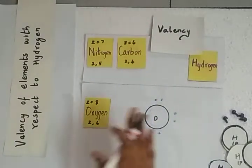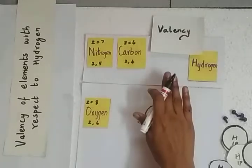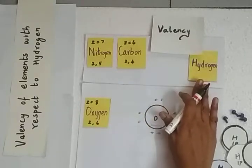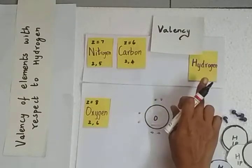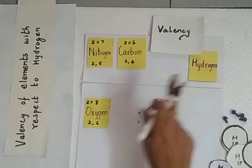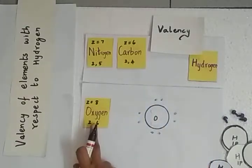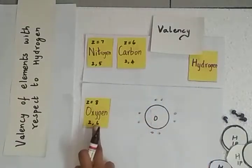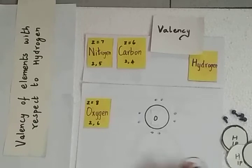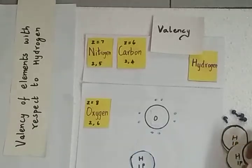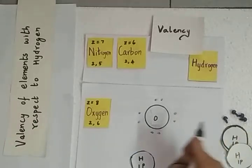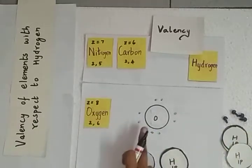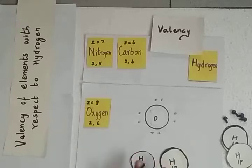We are going to learn to express the valency with respect to hydrogen — that is the number of hydrogen atoms that an atom of an element can combine with. If oxygen can combine with two atoms of hydrogen, then the valency of oxygen is 2.